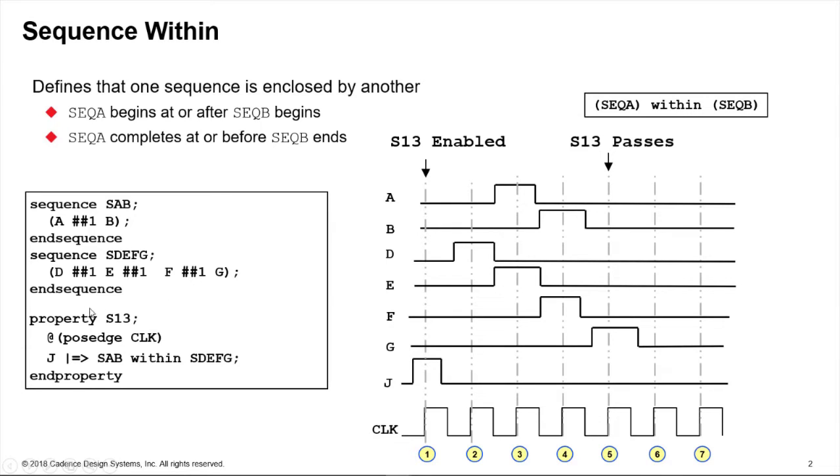How we use this inside of a property is like this. J is the enabling condition here, so when J occurs on cycle one we have a requirement for the right hand side to occur.